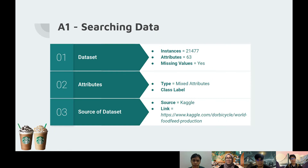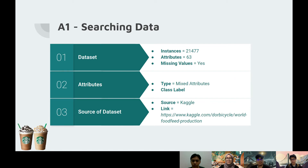In the A1 section, which is searching data, for the dataset we have a total of 21,477 instances, which includes 63 attributes. It has missing values, and the attributes have mixed types. We can also identify the class label. We got the dataset from Kaggle, as per the link provided.